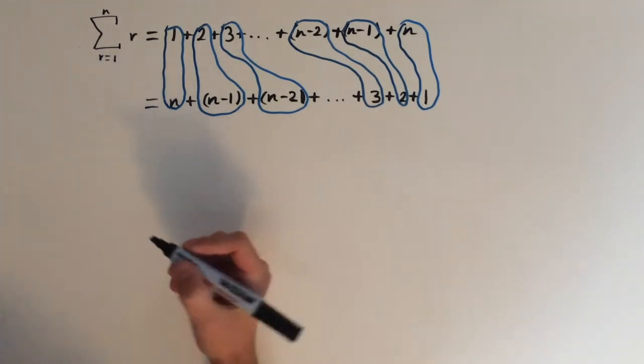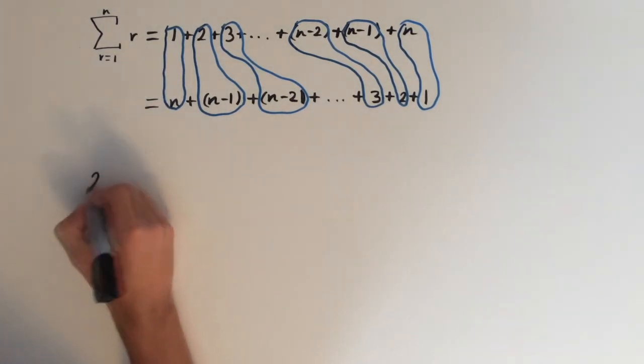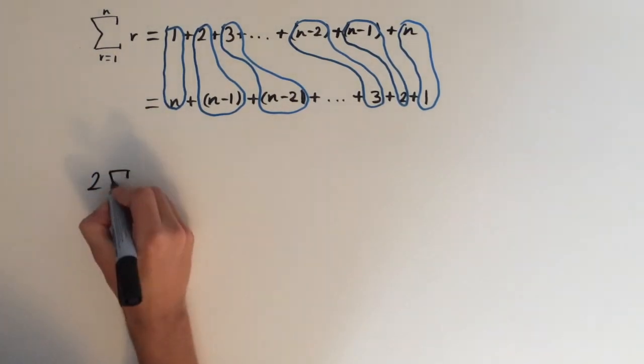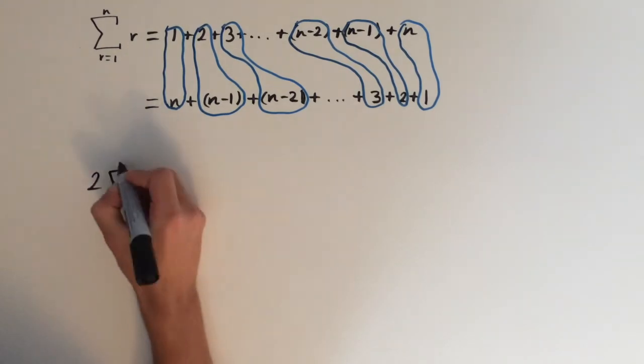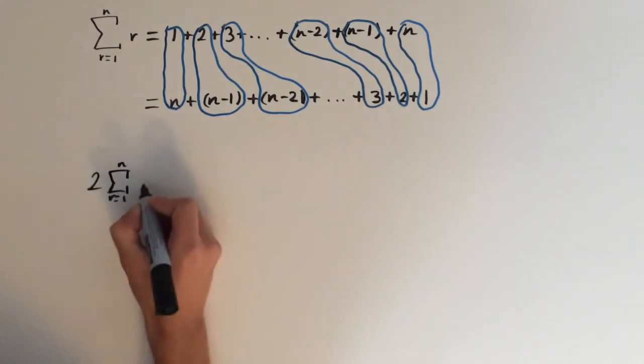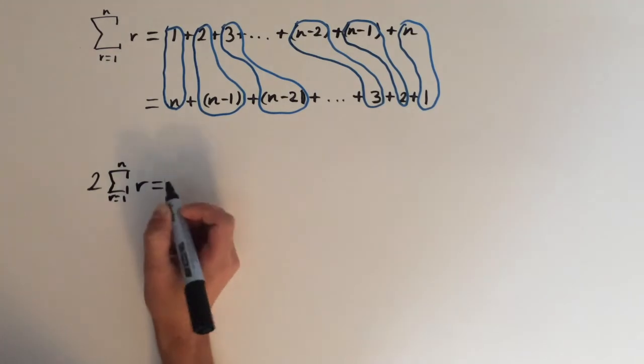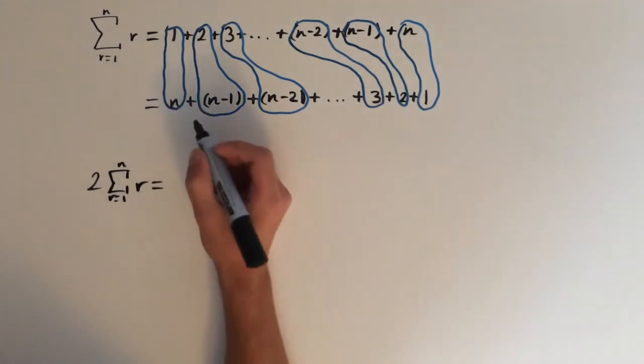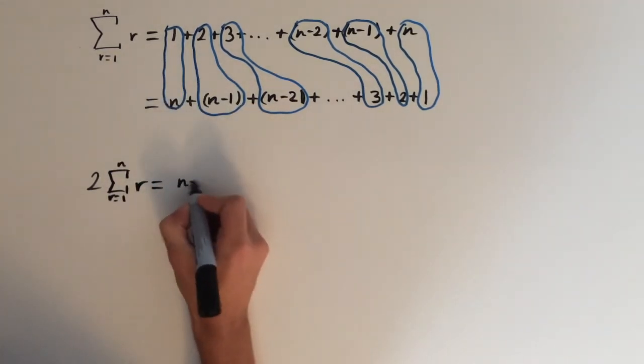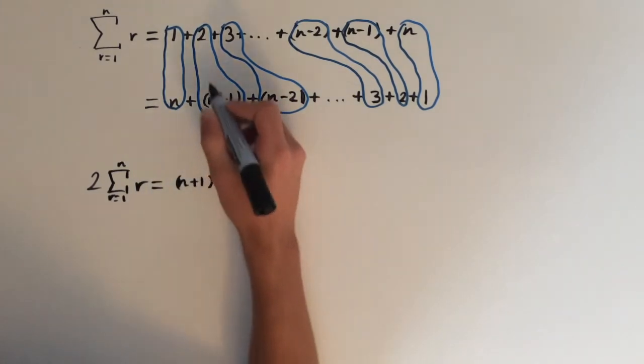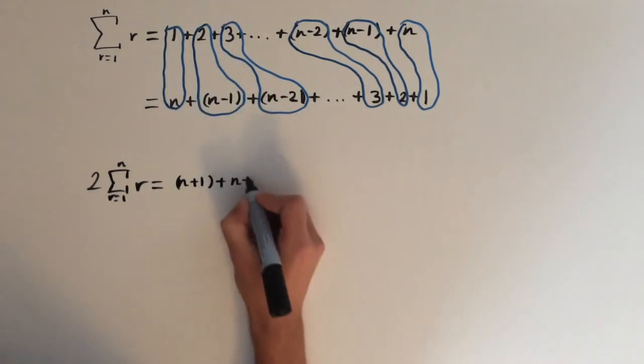On the left hand side, we're going to get two lots of this sum, so 2 times the sum. On the right hand side, we add these pairs up together. n plus 1 is the first term. The second term, n minus 1 plus 2, is also n plus 1.